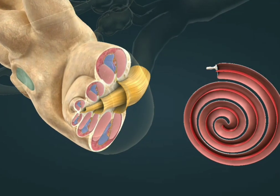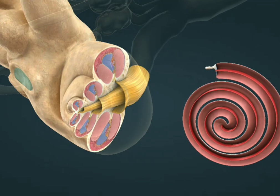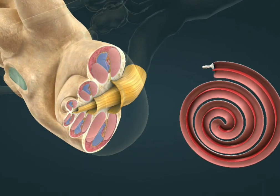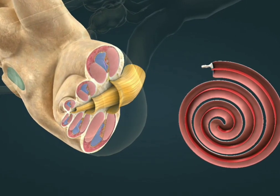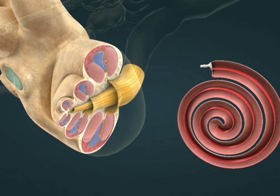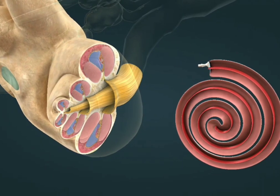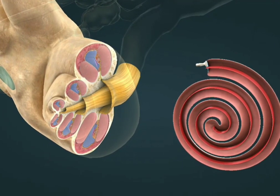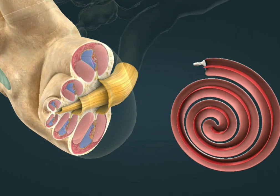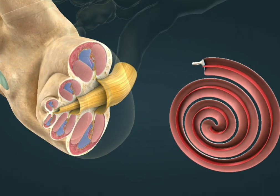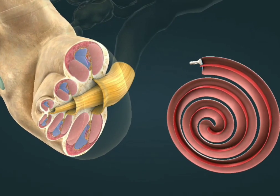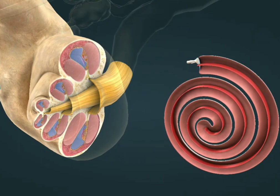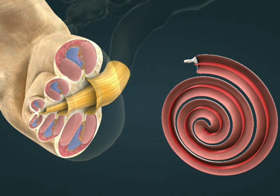The cochlea is filled with a fluid, which is vibrated by the stirrup. Higher frequency sounds cause vibrations of higher frequency in the liquid, which are absorbed in the initial section of the membrane. Lower frequency vibrations generated by deep sounds enter the cochlea and become absorbed closer to the tip.